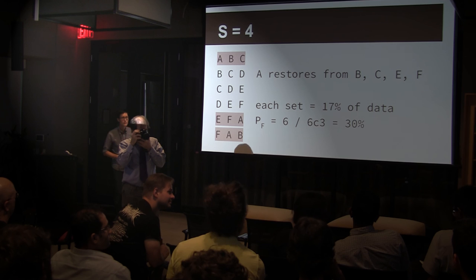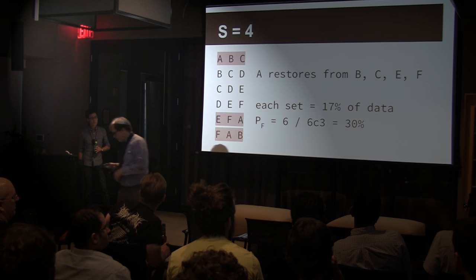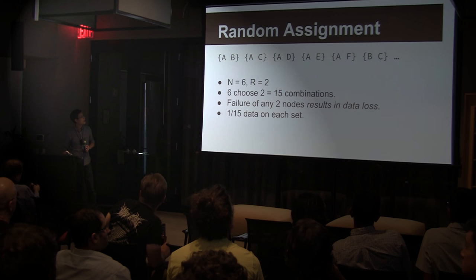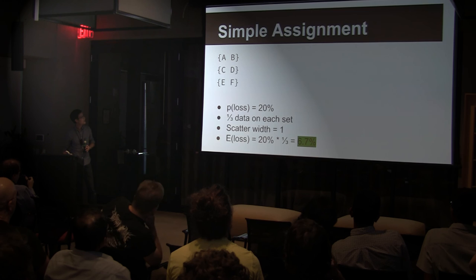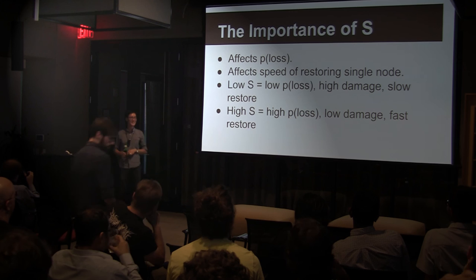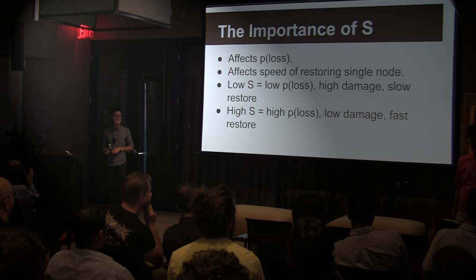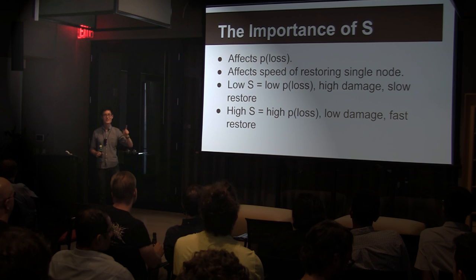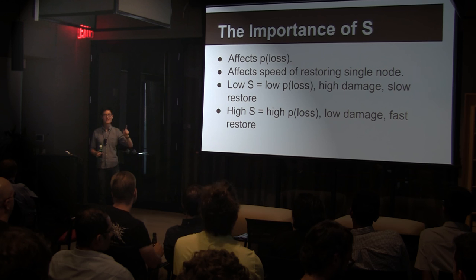Another question asked to put the scatter width trade-offs slide back up. The slides are available at bit.ly slash abalone-xylophone. Thanks everyone.